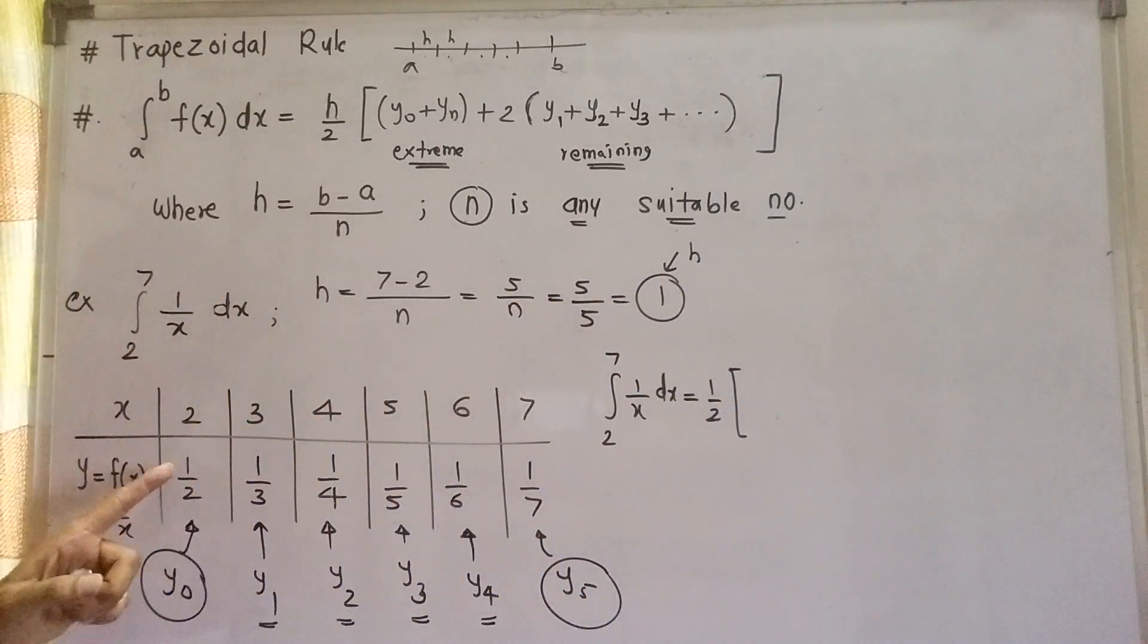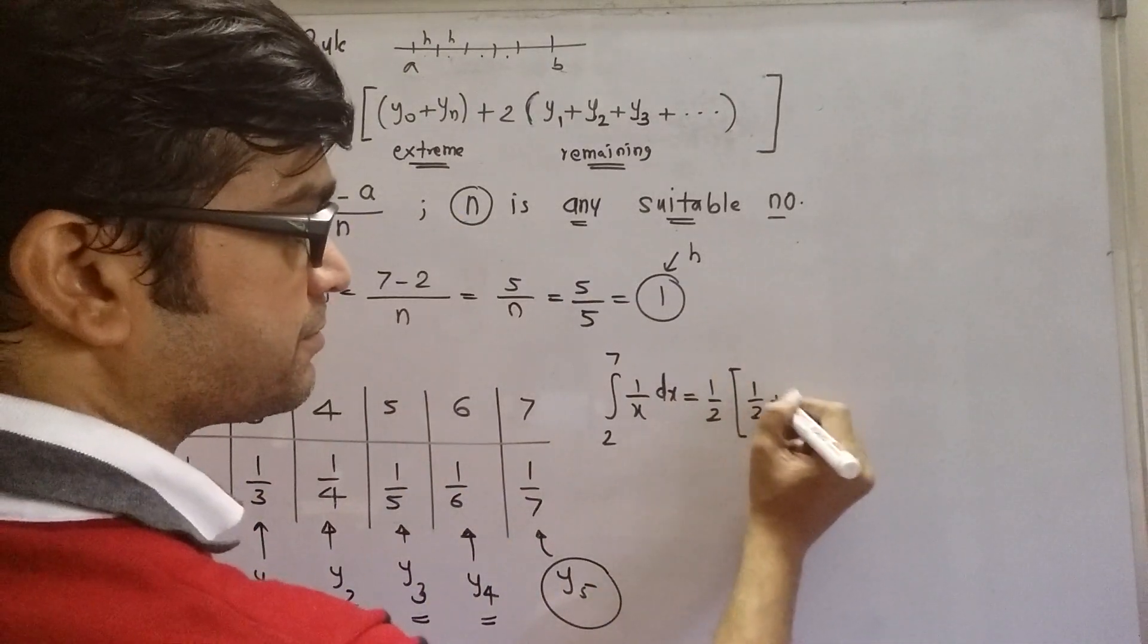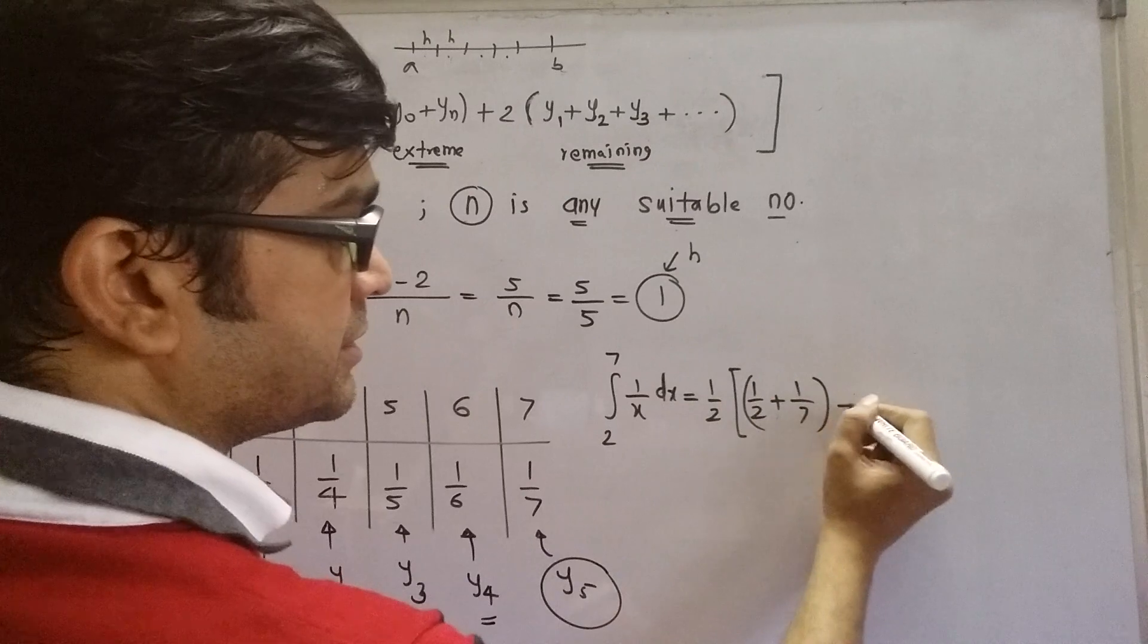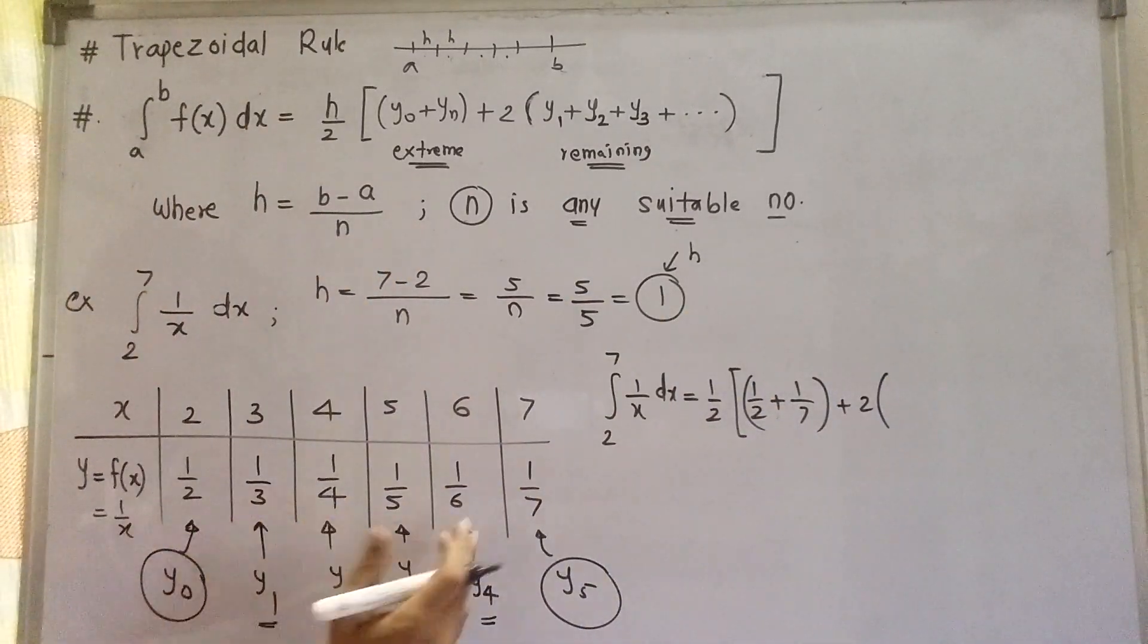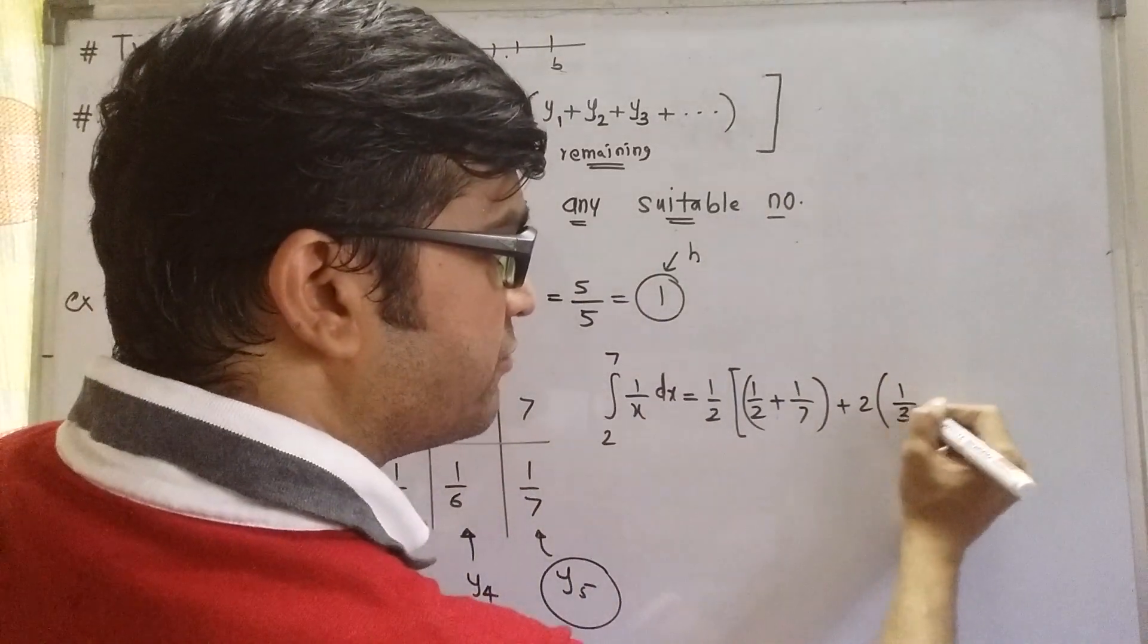Sum of extreme ordinates, that is 1 by 2 plus 1 by 7, plus 2 times all the remaining ordinates. These are the remaining ordinates: 1 by 3, 1 by 4, 1 by 5, and 1 by 6.